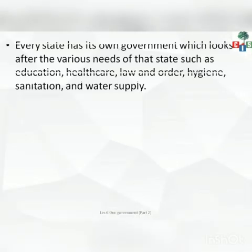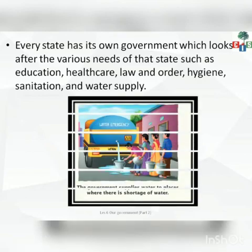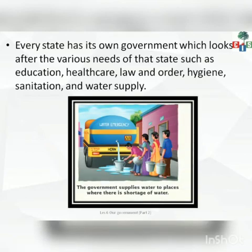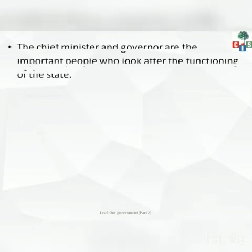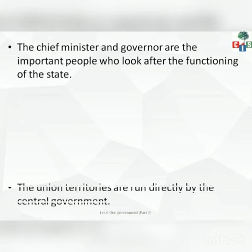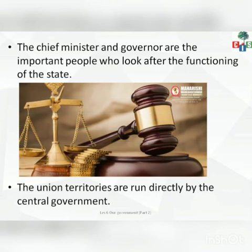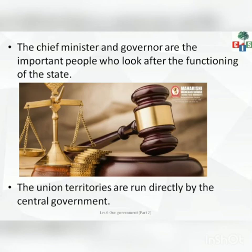Now we will start with the state government. Every state has its own government which looks after the various needs of the state, such as education, healthcare, law and order, hygiene, sanitation and water supply. Every state looks after their own state for these purposes. The chief minister and governor are the important people who look after the functioning of the state. The central government governs the whole country — headed by the Prime Minister. The state government is governed by the chief minister and governor.